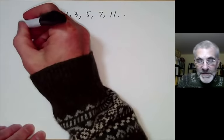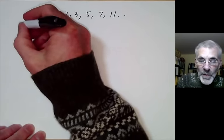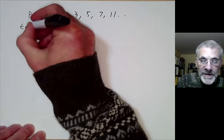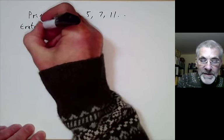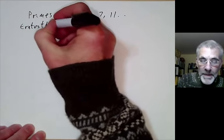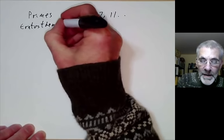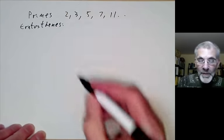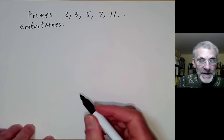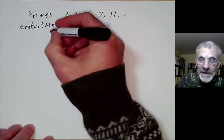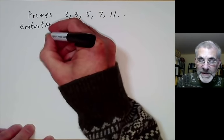One way is to use the sieve of Eratosthenes, where what you do is you write out all numbers.